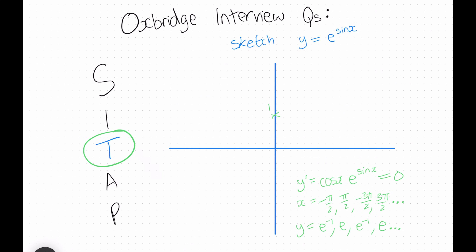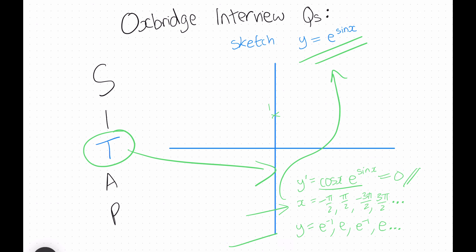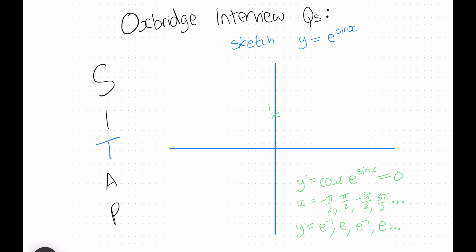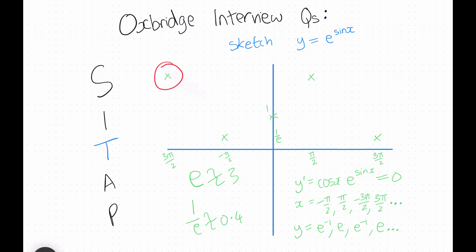Looking at the turning points, we differentiate to get cos x times e to the sine x, and equating this to 0, we get solutions for x and the corresponding y values. We know e is roughly equal to 3, and 1 over e is roughly equal to 0.4. We can then simply plot all our points on the graph with their respective x and y coordinates.